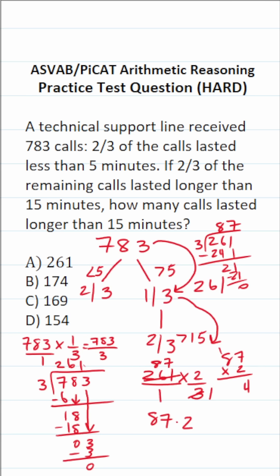Seven times two is 14, carry a one. Eight times two is 16, plus one is 17. So 174 calls went beyond 15 minutes. So this one is B.